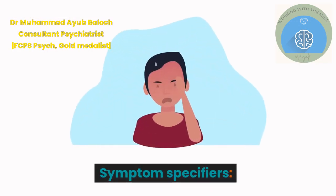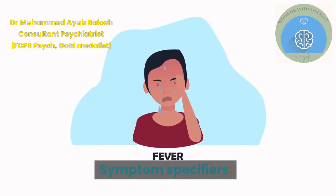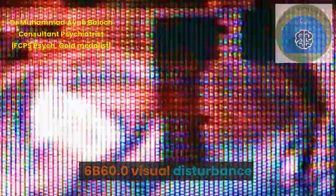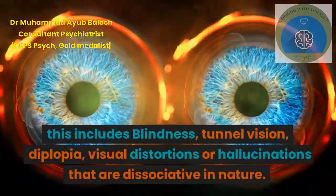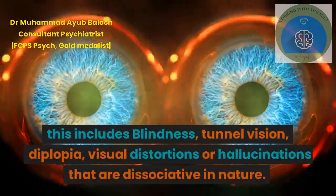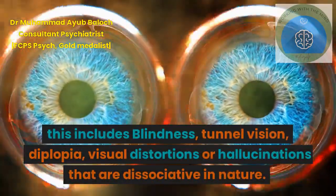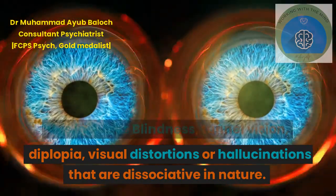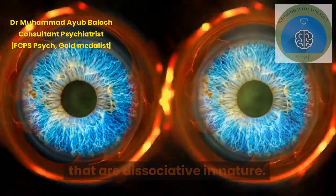Symptom Specifiers. 6B60.0 Visual Disturbance: This includes blindness, tunnel vision, diplopia, visual distortions or hallucinations that are dissociative in nature.